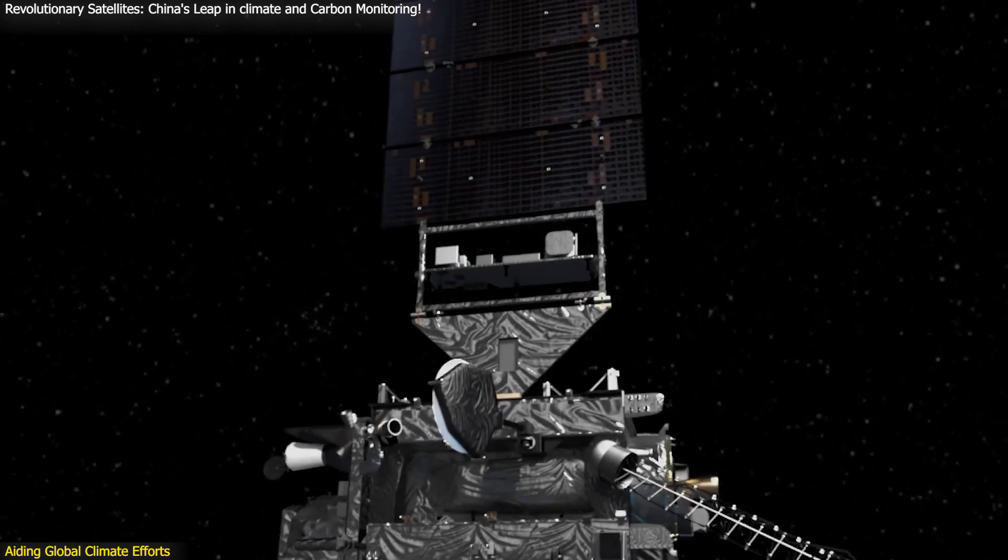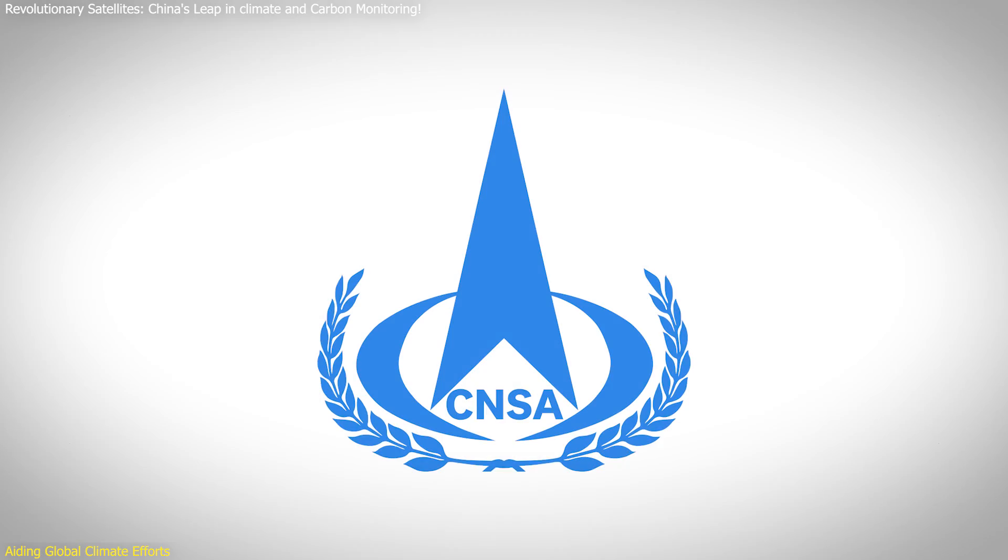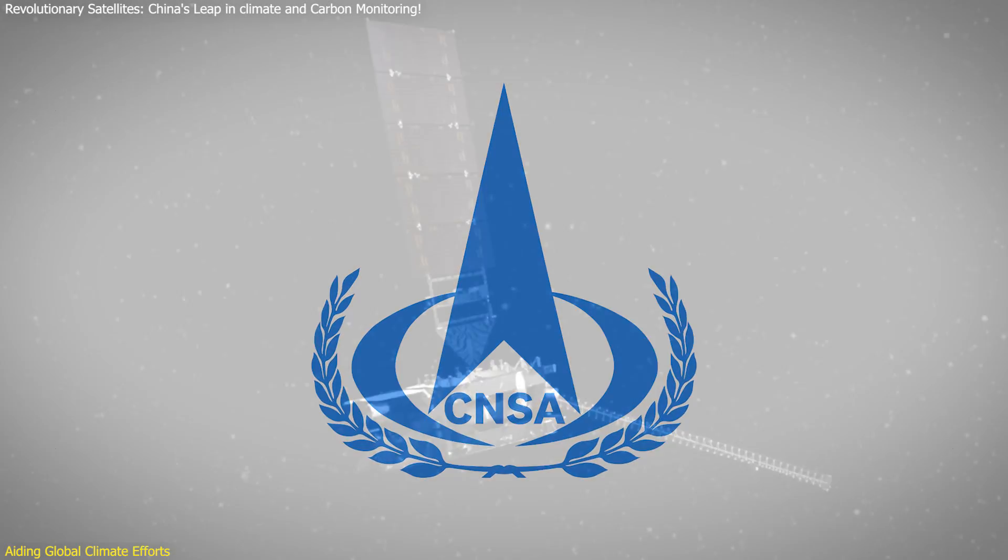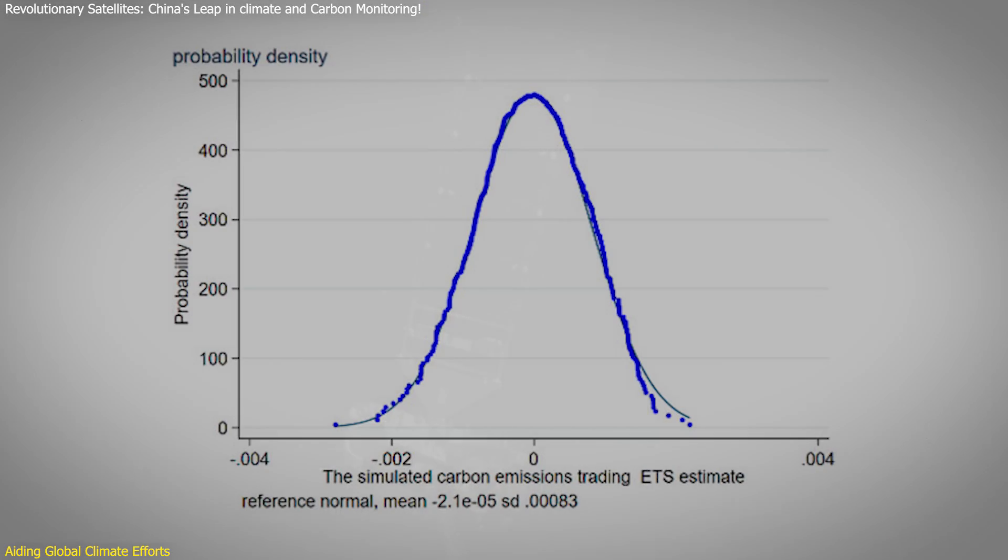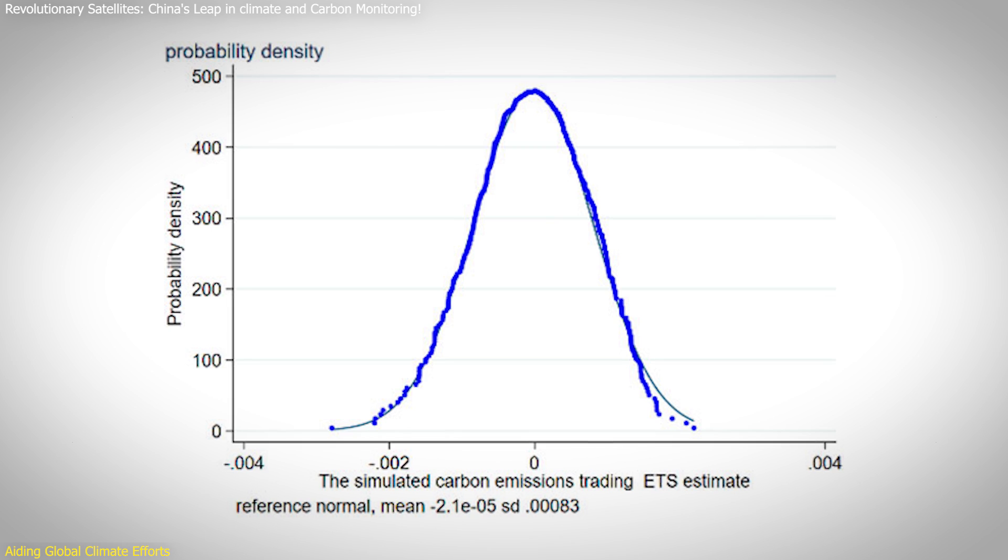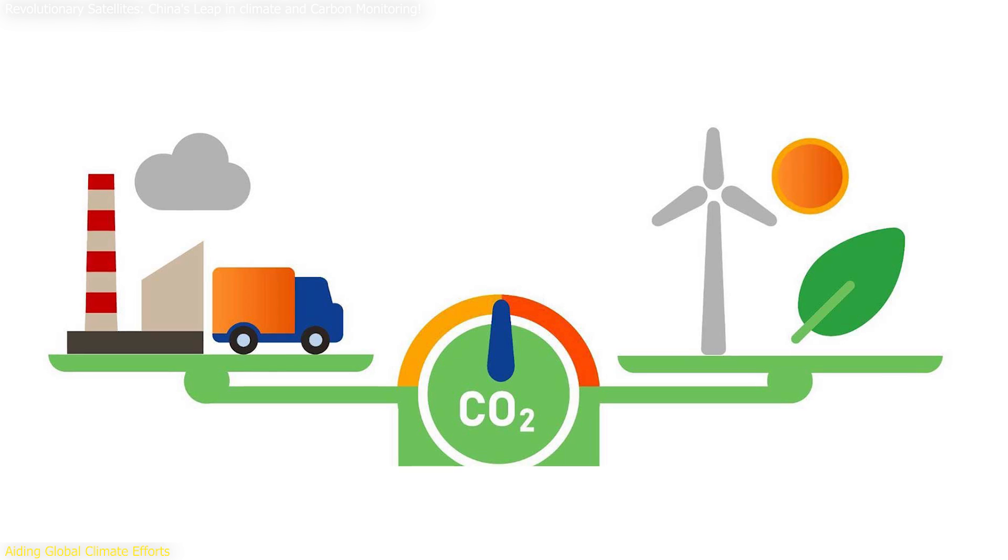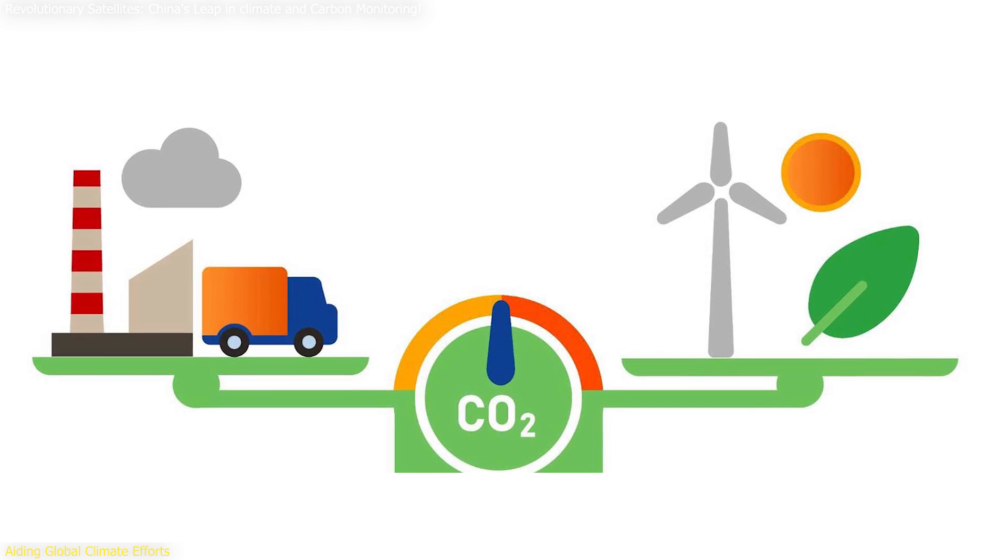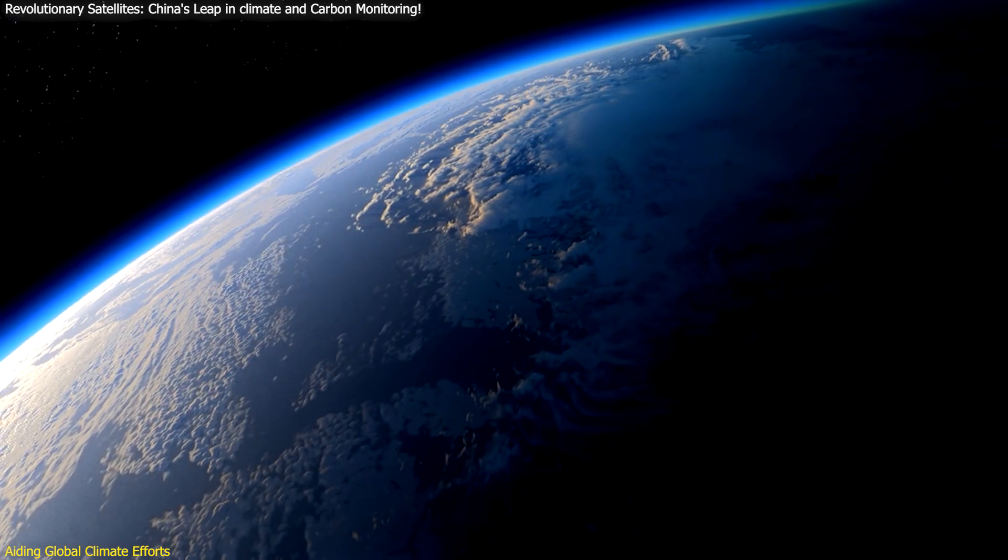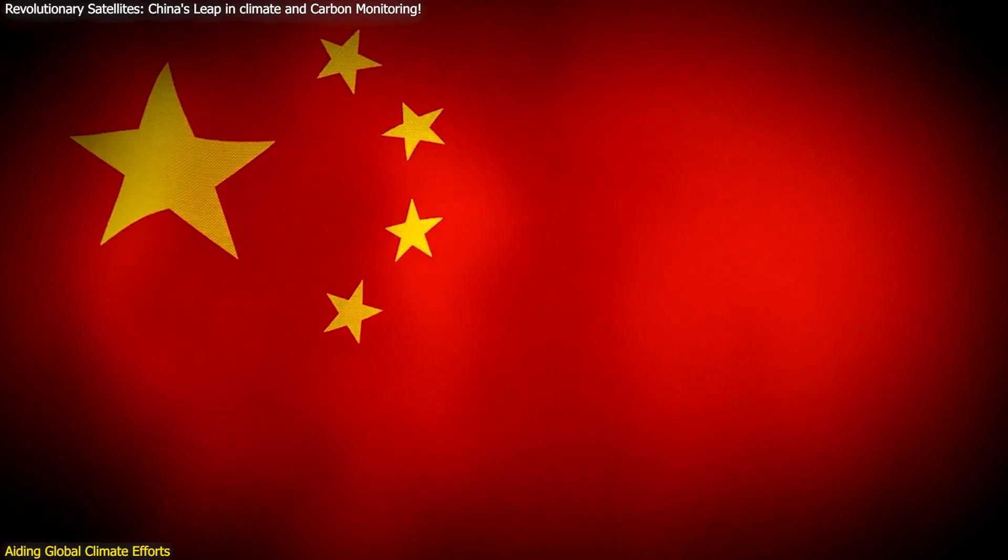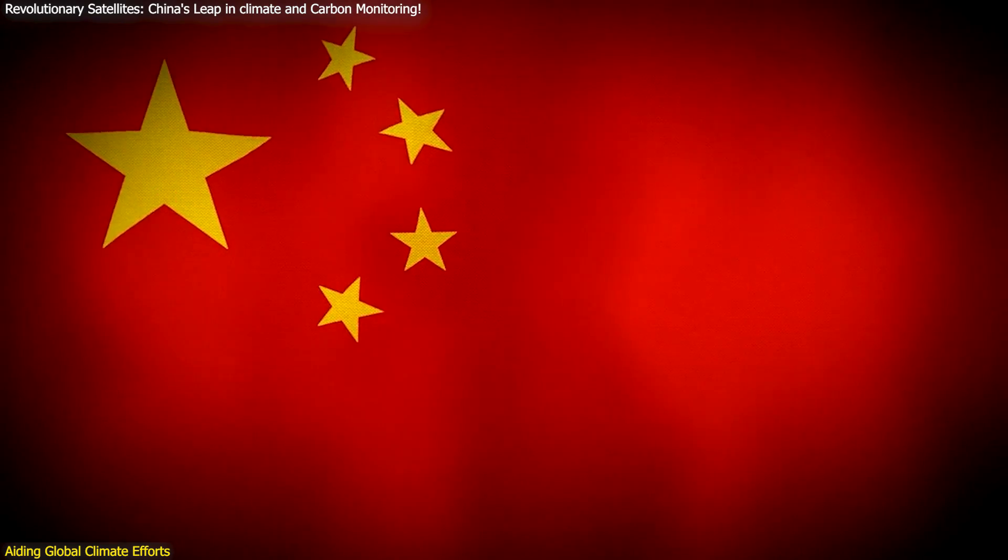The satellites support China's ambitious climate goals of achieving carbon peak and carbon neutrality. The CNSA emphasizes that the data from these satellites will help China monitor and manage its carbon emissions more effectively. Achieving carbon peak means reaching the highest point of carbon emissions before they start to decline, while carbon neutrality refers to balancing emitted and absorbed carbon. These goals are essential for mitigating climate change and ensuring a sustainable future. China's commitment to these goals demonstrates its leadership in global climate efforts and its dedication to a sustainable future.